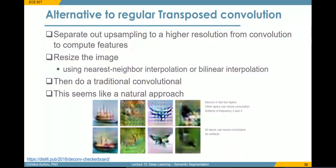Another method proposed beyond transposed convolution is to separate the upsampling from the convolution. Deconvolution does both upsampling and convolution in one step, but people have started to do them separately. We first perform upsampling using an interpolation method — like nearest neighbor or bilinear interpolation — and then perform a standard convolution on the output. This seems like a more natural approach than traditional deconvolution, and as you can see, this results in much smoother images with less noise and fewer artifacts.